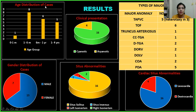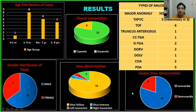Regarding age distribution, 8 patients fell in the age group 1–6 months, followed by 6 patients in 6 months to 1 year. Major anomalies encountered were TAPVC in 5 patients, of which 3 had situs ambiguus. TOF patients were 6, truncus arteriosus 1, CCTGA 1, DTGA 2, double outlet right ventricle 2, double outlet left ventricle 1, coarctation of aorta 2 patients, and 5 patients had PDA. 16 patients presented with apparent cyanosis. Out of 20 patients, 13 were male and 7 were female.